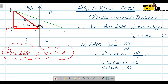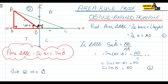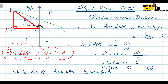We now have equation one — area = ½·a·AD — and equation two — AD = c·sin(B). All that's left is to substitute equation two into equation one. Therefore, the area of triangle ABC equals half times a times c·sin(B). We have basically proven our area rule.